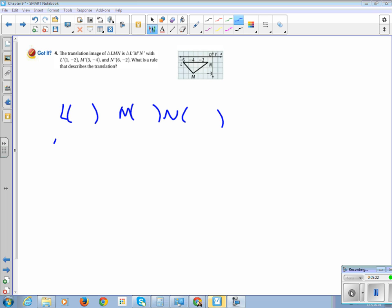So the coordinates for L are negative 6, negative 1. For M, they are negative 4, negative 3. And for N, they are negative 1, negative 1.